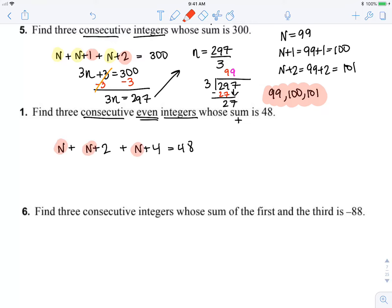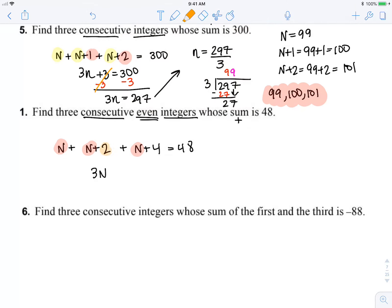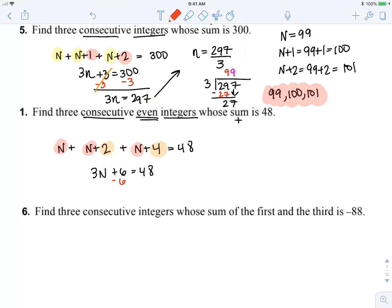Combine some like terms: 3n, and if I combine these terms plus 6 equals 48. Two-step equation. Now subtracting...